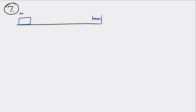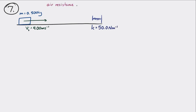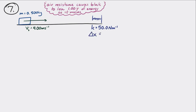A block slides across a flat frictionless surface toward a spring. The block has a mass of half a kilogram and initially moves at 4 meters per second. While the block is moving toward the spring, there's air resistance that causes the block to lose one joule of energy.